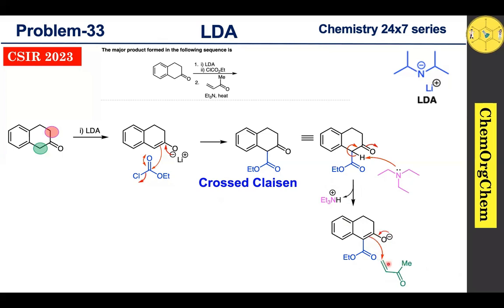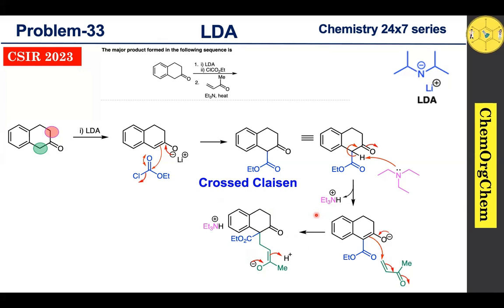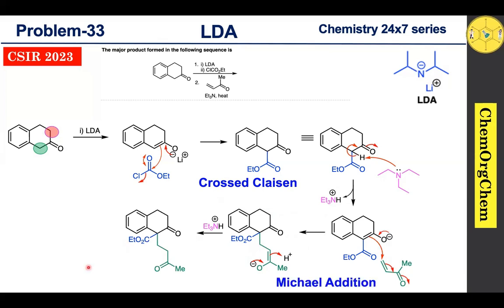The pi electrons attack the electron-deficient position of methyl vinyl ketone, then the pi electrons shift and move towards the oxygen atom, producing the corresponding intermediate. This intermediate readily takes a proton from triethylammonium ion to produce the next intermediate. This reaction is known as the Michael addition reaction.